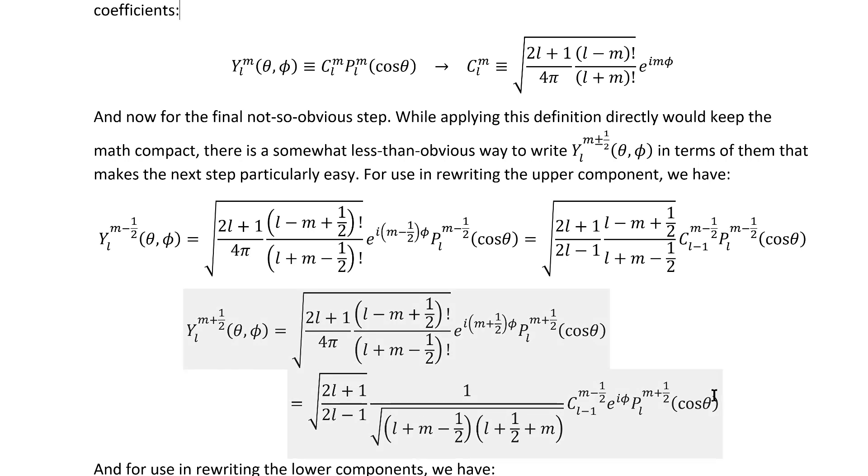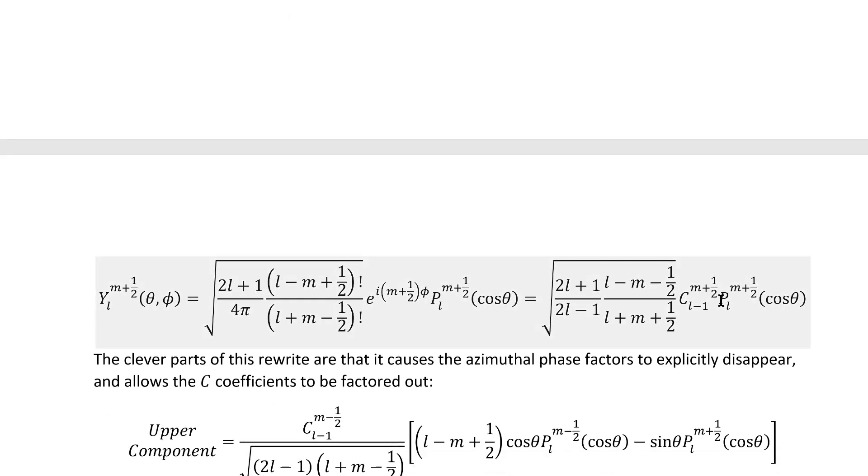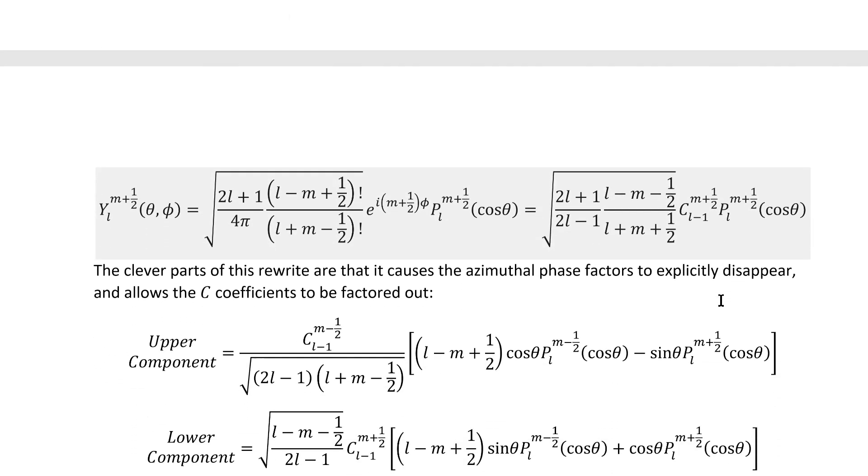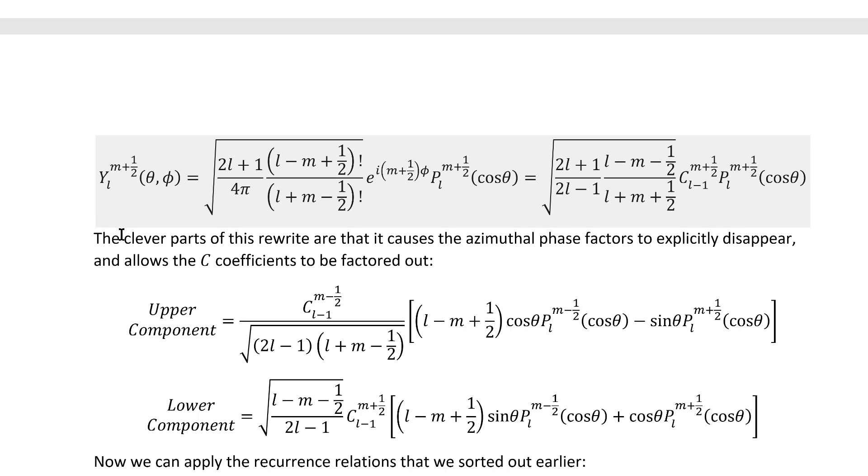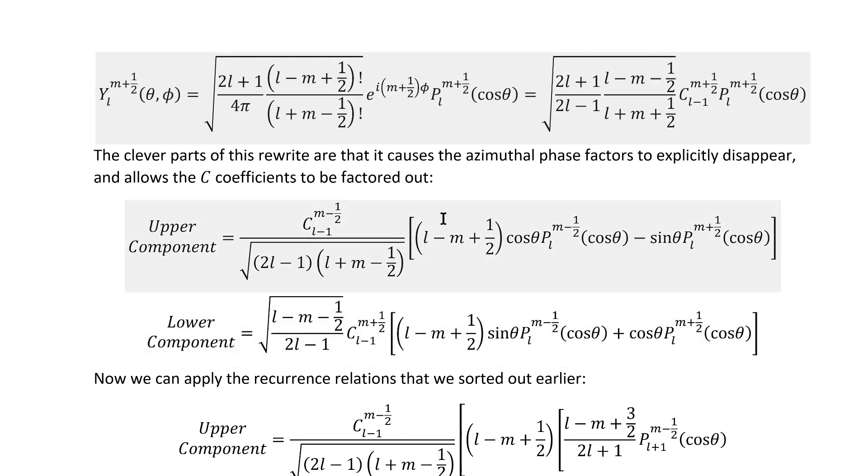And for rewriting the lower component, this formula and this formula end up being useful. The clever parts of this rewrite are that it causes the azimuthal phase factors to explicitly disappear, and also allows the C coefficients to be factored out. We end up with these much less scary-looking expressions.